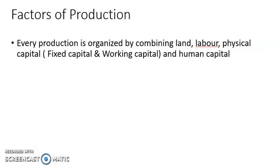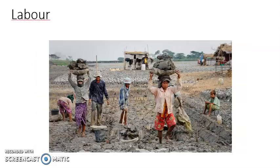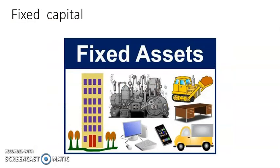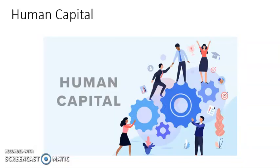To summarize, there are four important factors of production: land, labor, physical capital — which includes fixed capital and working capital — and human capital, which is also very essential for production. Production means producing goods and services that we want, and for every production, these factors are very much essential.